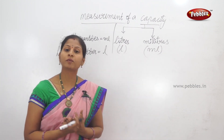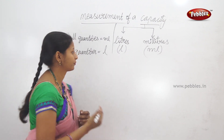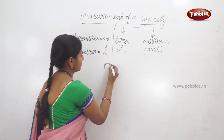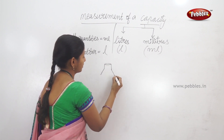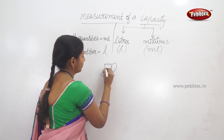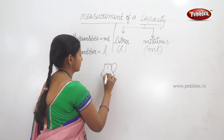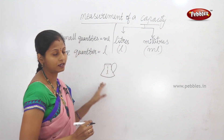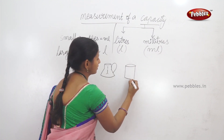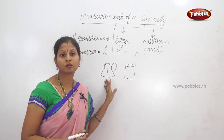If you want to measure wheat, we will use jars. This is 1 liter. We will use jars in the shop for petrol and kerosene.